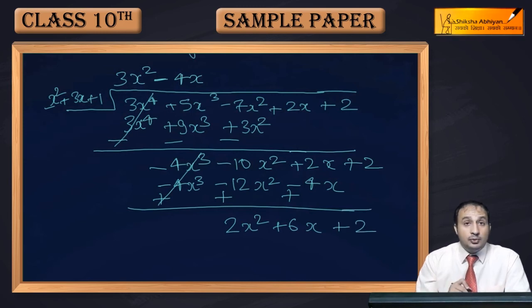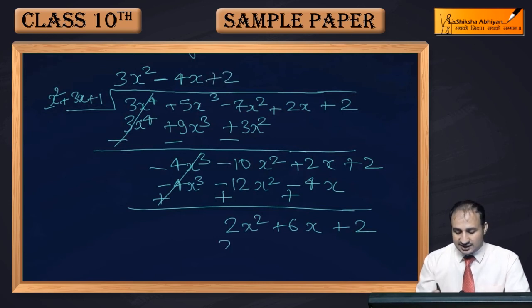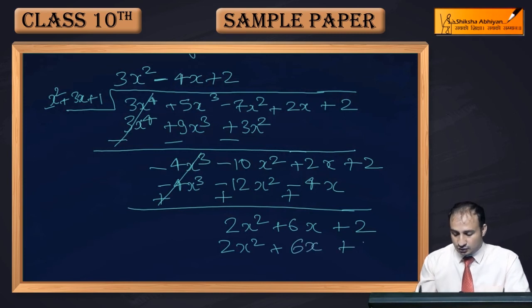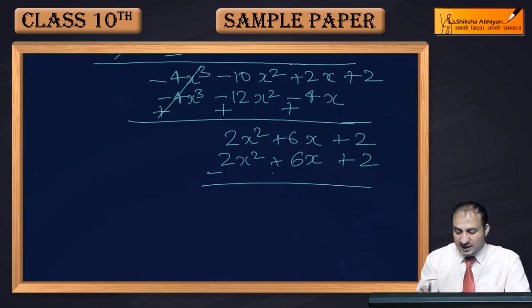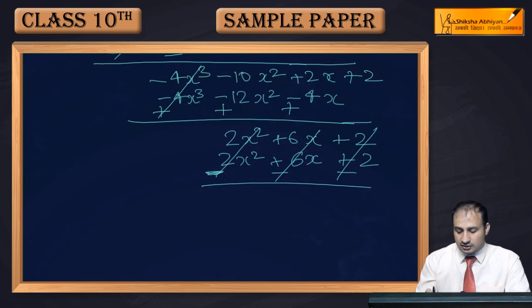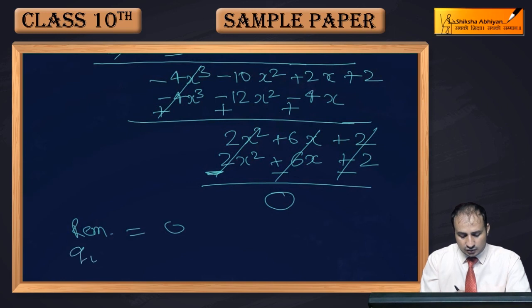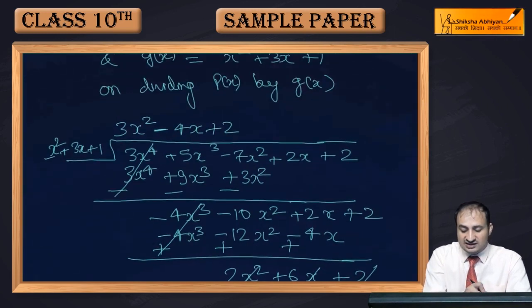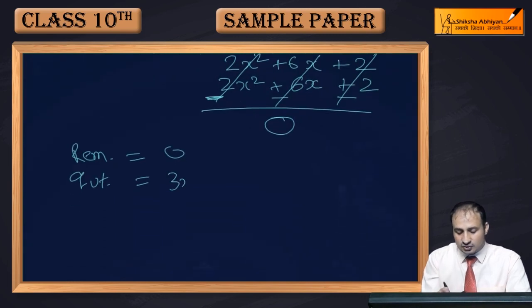Bringing down +2, we now have 2x² + 6x + 2. Dividing 2x² by x² gives +2, so the next quotient term is 2. Multiplying 2 by x² + 3x + 1 gives 2x² + 6x + 2. After subtraction, 2x² - 2x² cancels, 6x - 6x cancels, and 2 - 2 cancels. So the remainder is 0, and the quotient is 3x² - 4x + 2.